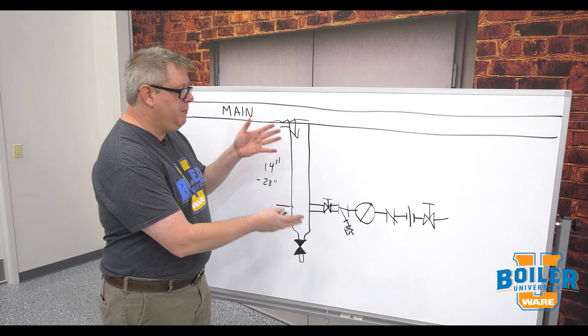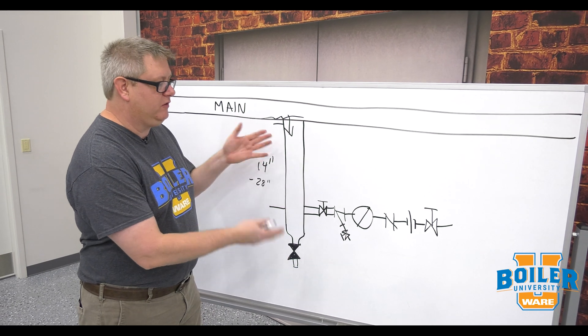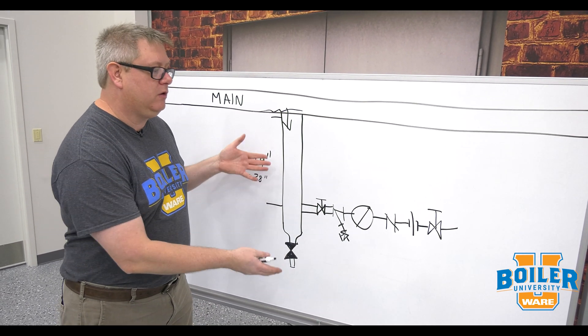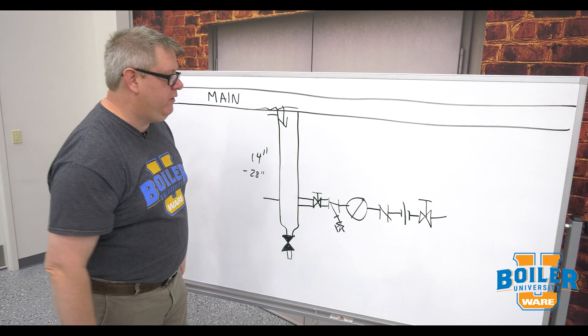This is a good example of the minimum near trap piping. There's always accessories things that we can add to this but this is a good example what to look for on your checklist in the field.